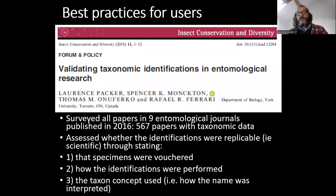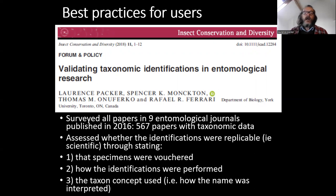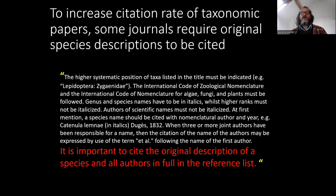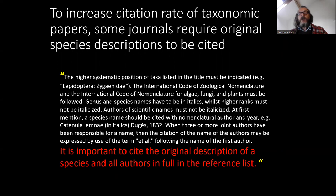The first part was prompted in part by this: we surveyed 567 papers in entomology published in 2016 and looked at some things that really should be easy. Were things vouchered? How did you perform the identifications? And the third thing, a taxon concept — that's a little bit more difficult. So I'm going to have a little side trip through taxon concepts. The idea of criticizing this came about because journals began requiring people to cite the original description paper of all species listed.